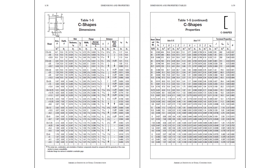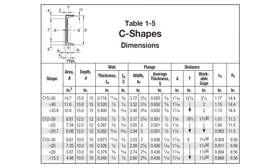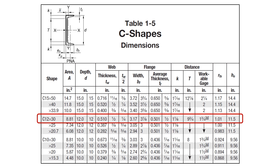Next, we'll go to Table 1-5 of the AISC manual where we find the section properties for the C12 by 30. The cross-sectional area for the C12 by 30 is 8.81 inches squared. We'll also need the thickness of the web, T sub w, which is 0.510 inches.